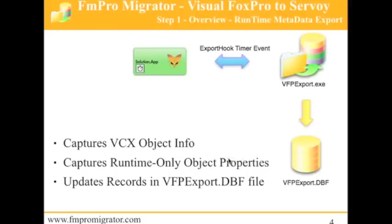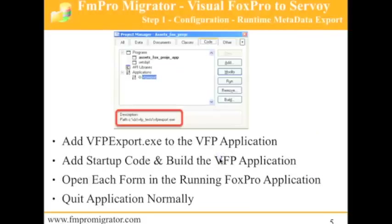What I did not show was the runtime metadata capturing process. During the development of this automated FoxPro conversion process, it has become evident that there are object properties which are either inherited or only set programmatically at runtime. Therefore, this runtime metadata capturing process has been developed to solve this particular problem. You add the VFP export utility — a compiled FoxPro application — to your FoxPro application, add startup code to your app, build and run it. One second after each form is open on screen, the properties of each form object are captured into memory. Upon application shutdown, this new information is used to update the existing records within the VFPExport.dbf file.